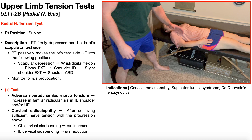Now we're going to talk about the radial nerve tension test. This test is not contained within the clinical prediction rule for a cervical radiculopathy. However, if you suspect a cervical radiculopathy, this test is still indicated because they can still have radial nerve tension. Other indications include supinator tunnel syndrome, de Quervain's tenosynovitis, and also following traumatic brain injuries — oftentimes those individuals will have nerve tension.